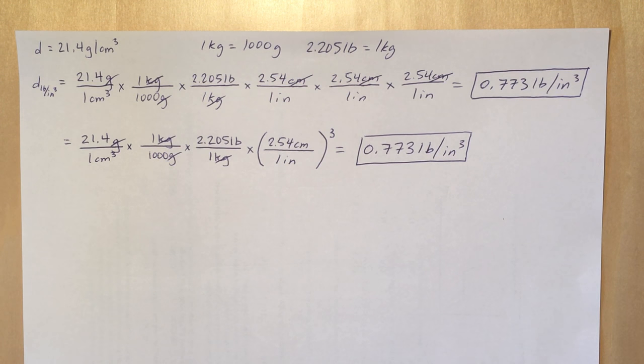And it really emphasizes the fact that 2.54 is a conversion factor for the one inch. So you need it each time. So oftentimes students will only use the 2.54 one time, and if you did that you'd get a different answer.